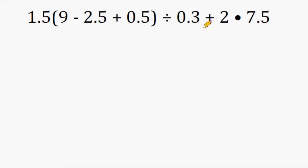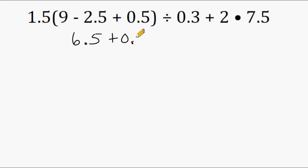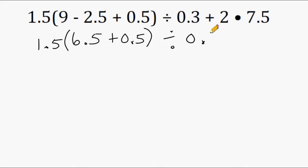With this example, we actually do have parentheses, so we have to do what's in parentheses first. We have a subtraction and an addition sign, and when you have both, you go from left to right. So let's start by taking 9 and subtracting from it 2.5. 9 take away 2.5 is 6.5. And then we have to add to that 0.5, and after we come up with that sum, we're going to multiply that by 1.5. And let's bring down the rest of our expression: 0.3 plus 2 times 7.5.